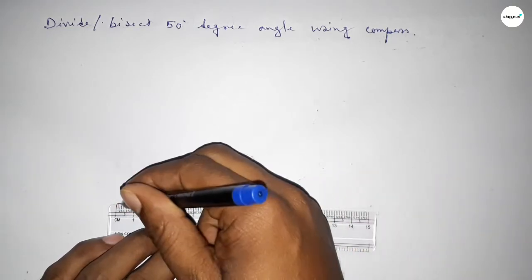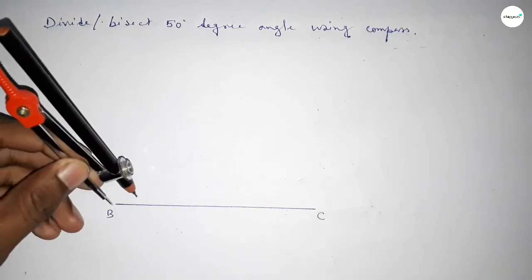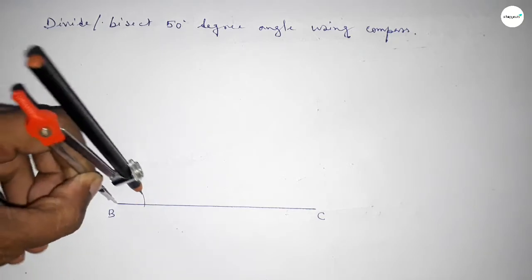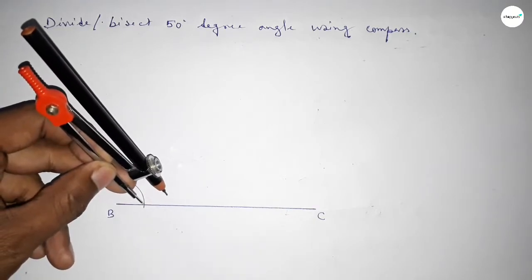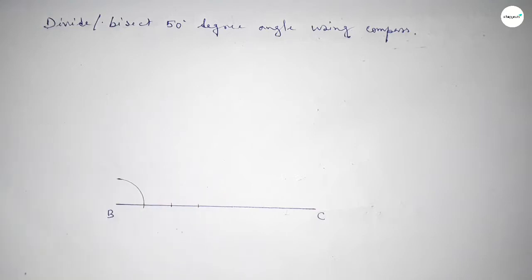of any length. Drawing the line and marking point B here and C here. Next, we have to draw a 50-degree angle on point B. Taking any length and drawing an arc. With the same length, putting the compass here and cutting here.